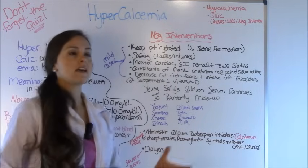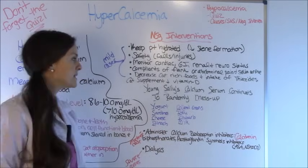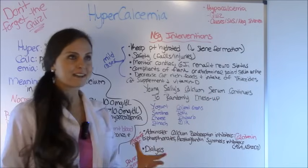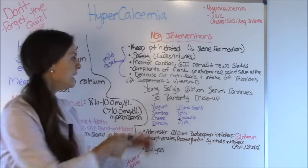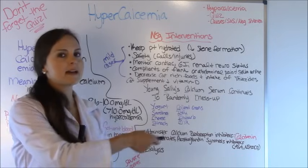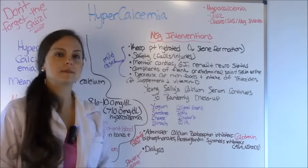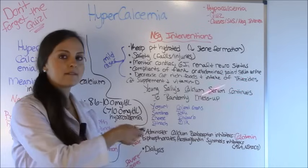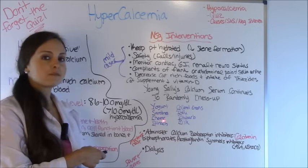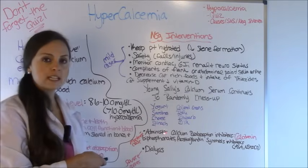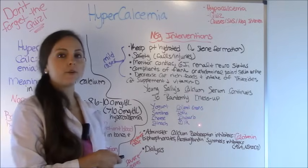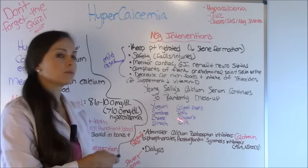Here's a saying to help you remember calcium-rich foods: 'Young Sally's calcium serum continues to randomly mess up. She can't keep that calcium level normal.' The beginning letter of each word corresponds to a food: Y for yogurt, S for sardines, C for cheese, S for spinach, C for collard greens, T for tofu, R for rhubarb, and M for milk. Those are your calcium-rich foods.